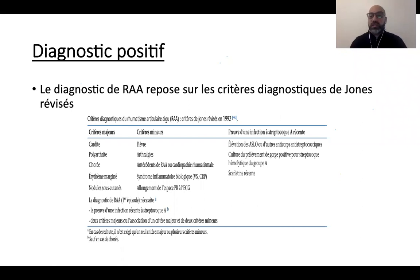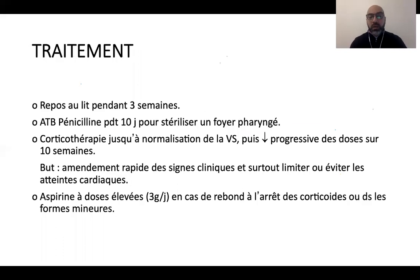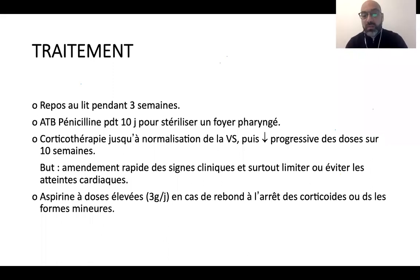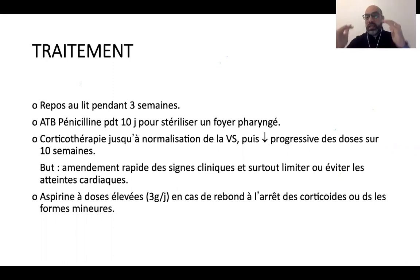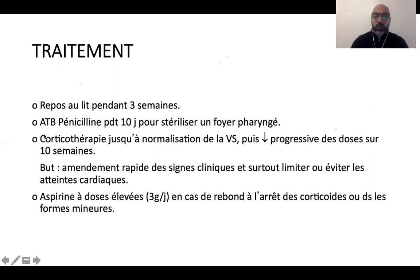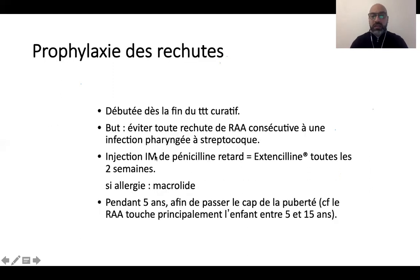Le traitement : repos au lit pendant au moins trois semaines, antibiotiques contre le streptocoque bêta-hémolytique pendant au moins dix jours. Lorsqu'on a un syndrome inflammatoire élevé avec arthralgies au premier plan, une corticothérapie est instaurée chez les enfants pour amender rapidement les signes cliniques — on va essayer d'étouffer le système immunitaire grâce au corticoïde. En cas de rebond, on peut utiliser de l'aspirine à fortes doses à titre anti-inflammatoire.